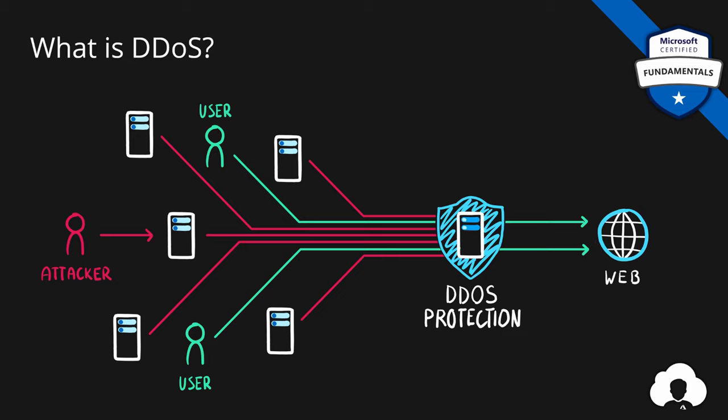One of the best things about DDoS protection is that the basic plan comes with all Azure services by default, and you don't even pay anything extra — it's already included in the price of that service. But if you need more protection, this service comes with a standard plan, which allows you to protect your application from more sophisticated attacks.